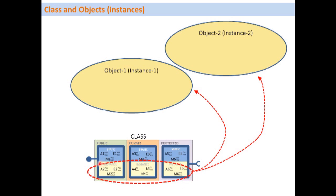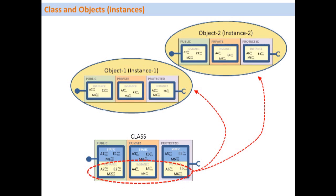When we create objects from a class, only the instance components of the class are replicated to each object. So object one has its own set of instance components, and object two has its own set — these are independent of each other. Static components, on the other hand, belong to the class and are common to all objects. Both object one and object two can access the static components of the class, but there is only a single set of static components shared across all objects.